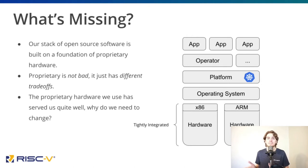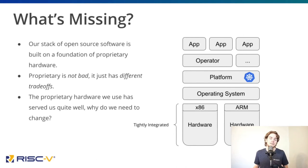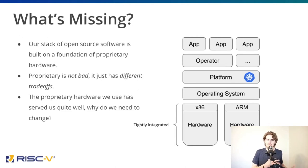We will not be suggesting today that every company drop what they're doing and start building out their own foundry and developing custom silicon. Until now, this proprietary hardware model has actually worked quite well. So what makes today different than the last 50 years of computing? Or in other words, why should I care?